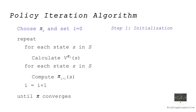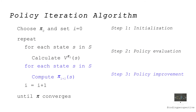In step 1, we choose a policy pi_0 and set i to 0. Then, at any iteration i, we calculate the value functions v^{pi_i}(S) for each state S under policy pi_i by solving a set of linear equations. This is the policy evaluation step. After calculating these value functions, we compute pi_{i+1}(S) for each state S using v^{pi_i}(S). This is the policy improvement step. We repeat these two steps until the policy pi converges.